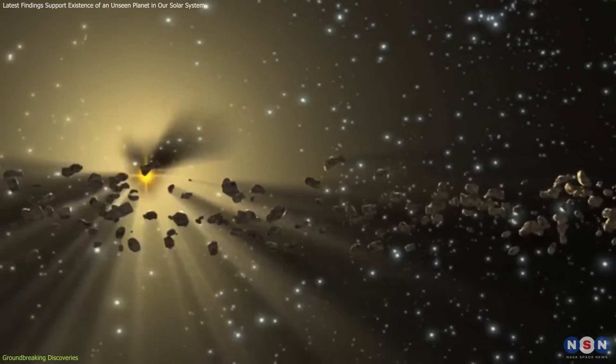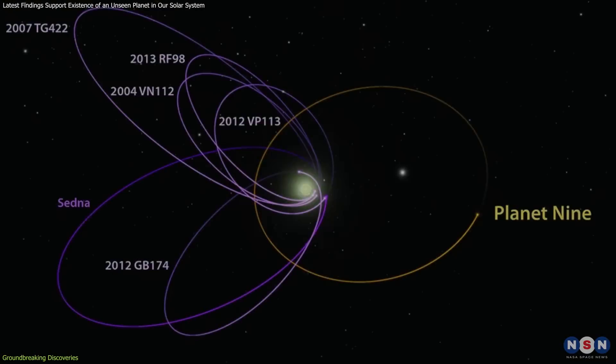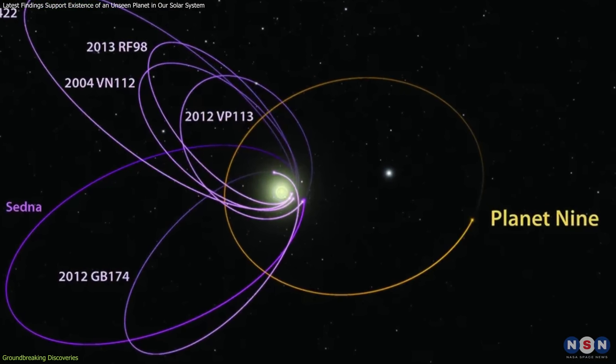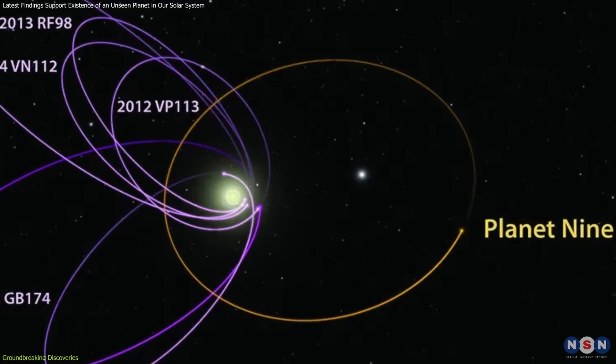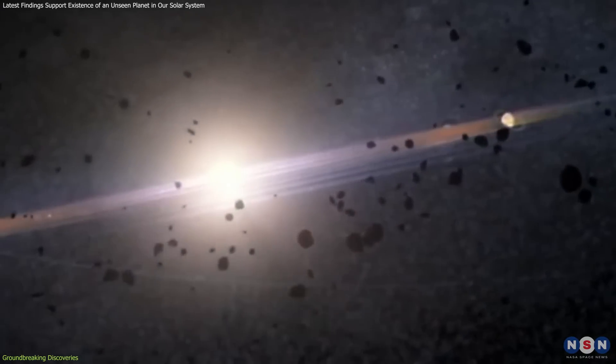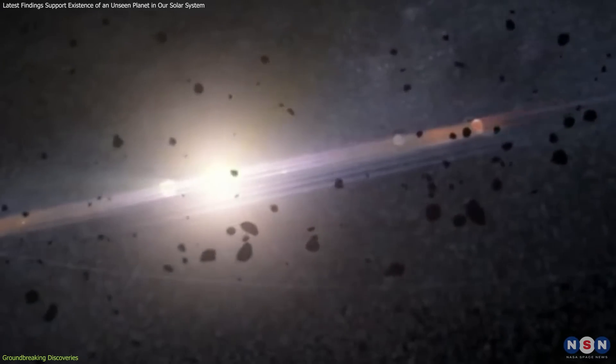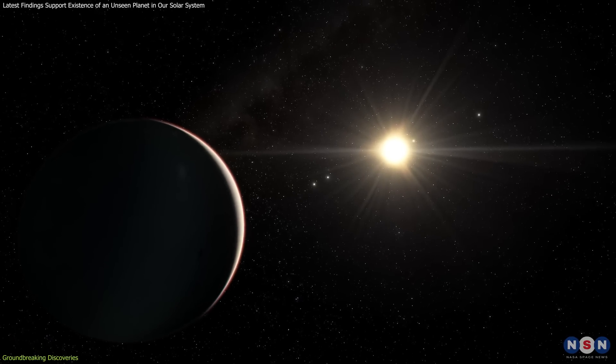Moreover, the search is guided by detailed analyses of the orbital mechanics involved. These analyses take into account factors like the orbital period, inclination, and eccentricity of potential orbits for Planet 9. By correlating these theoretical orbits with the observed orbits of TNOs, scientists can refine their predictions about where Planet 9 might be located.